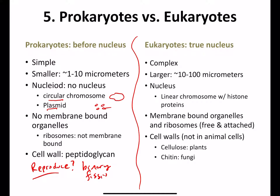For eukaryotes, how do they reproduce? They're going to reproduce by mitosis or meiosis in terms of sexual reproduction.